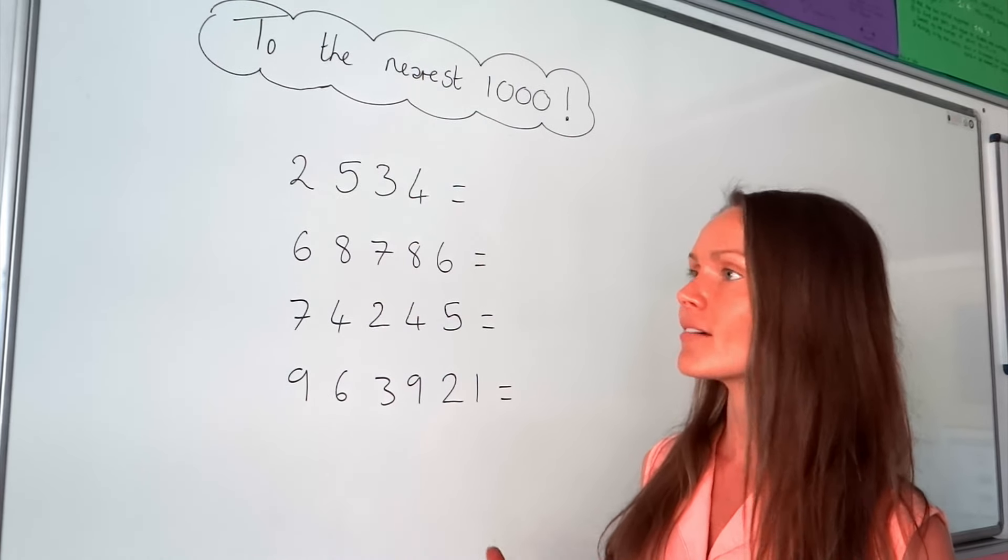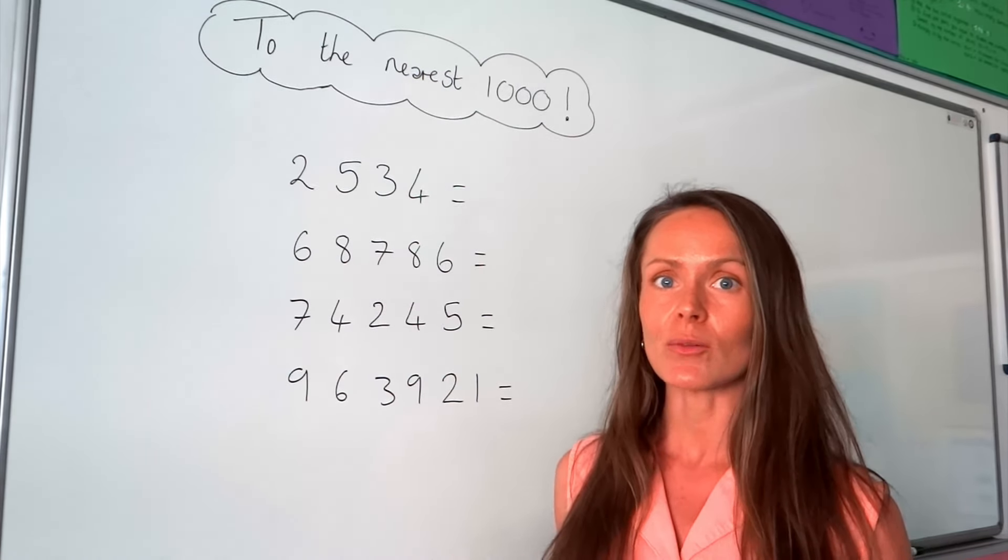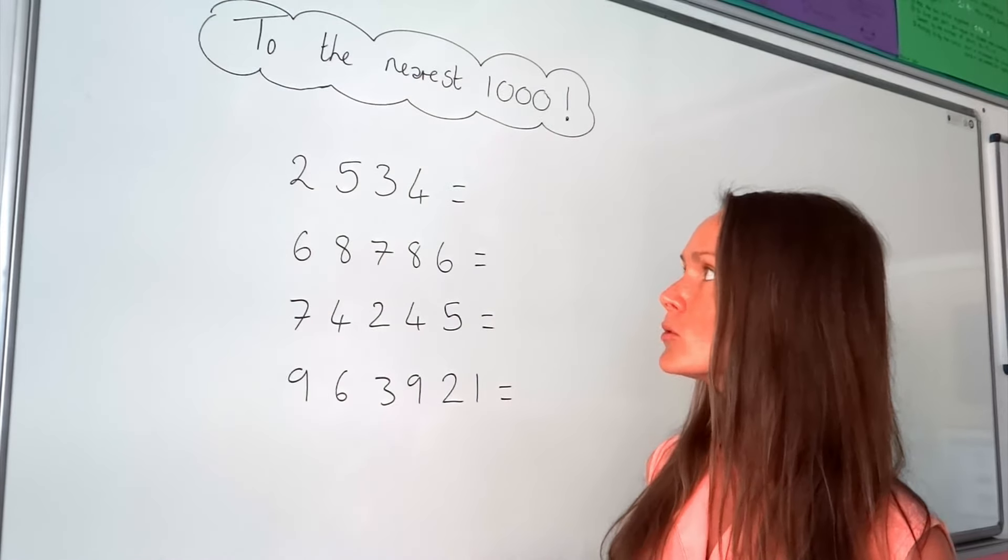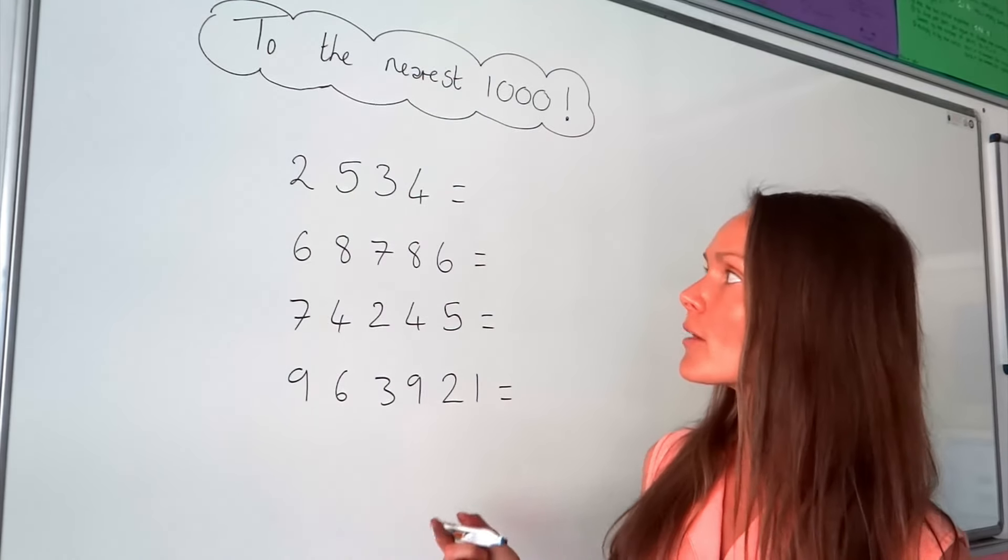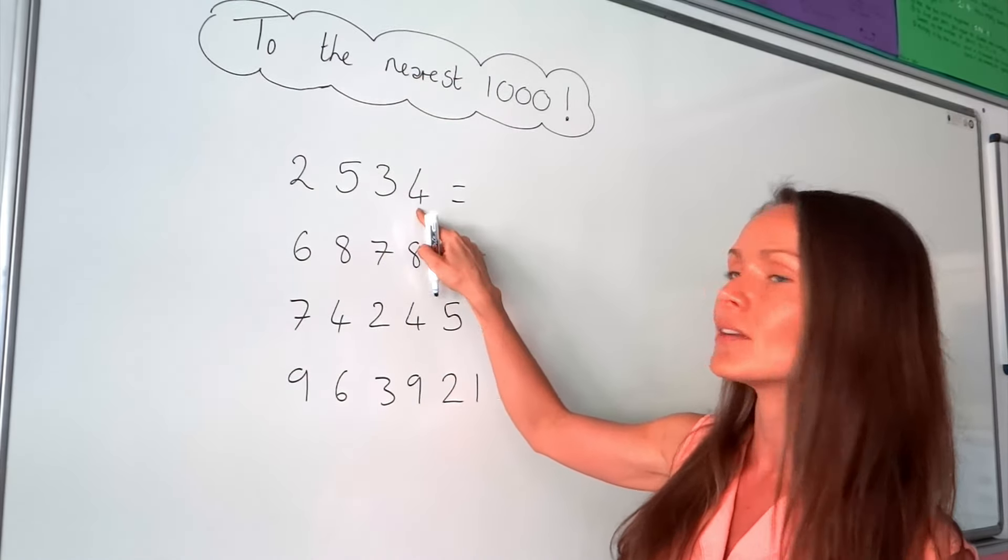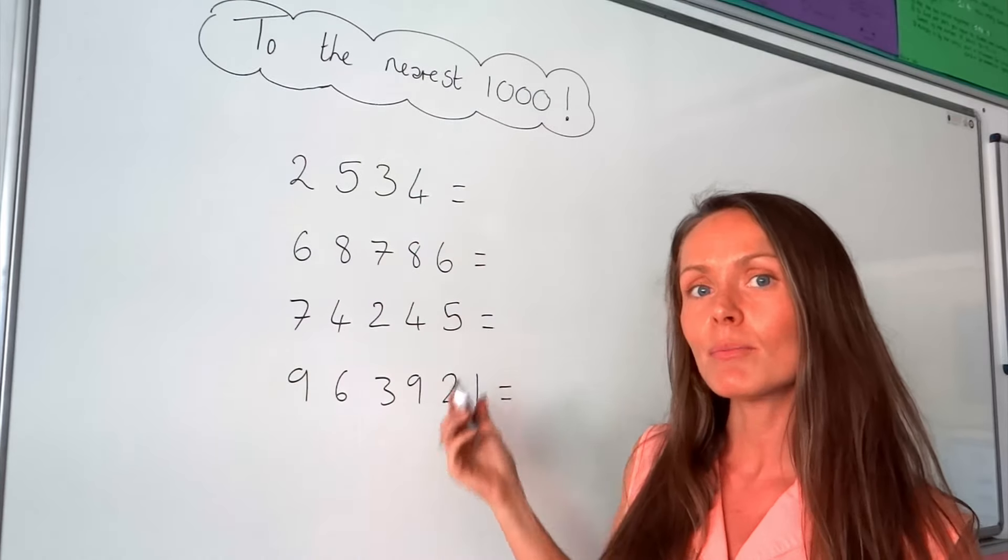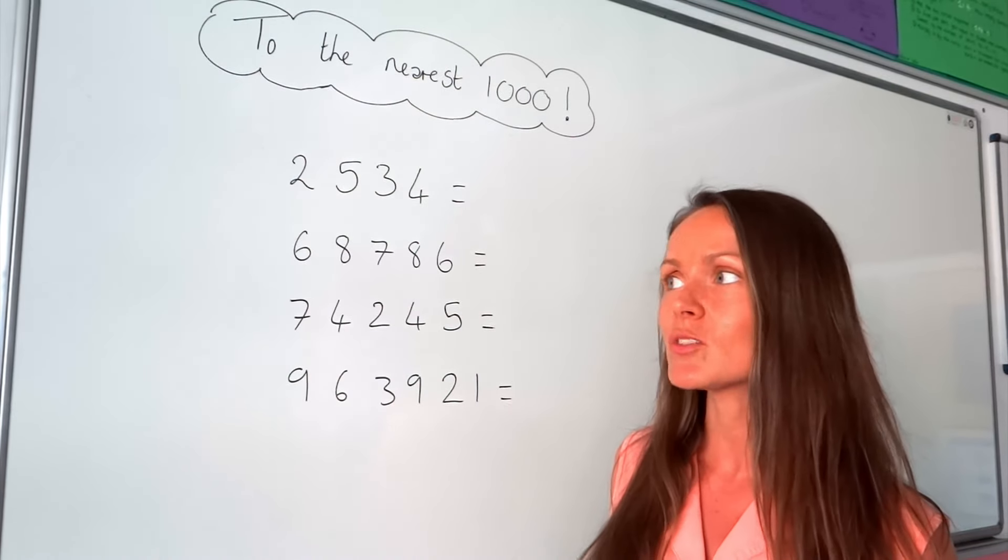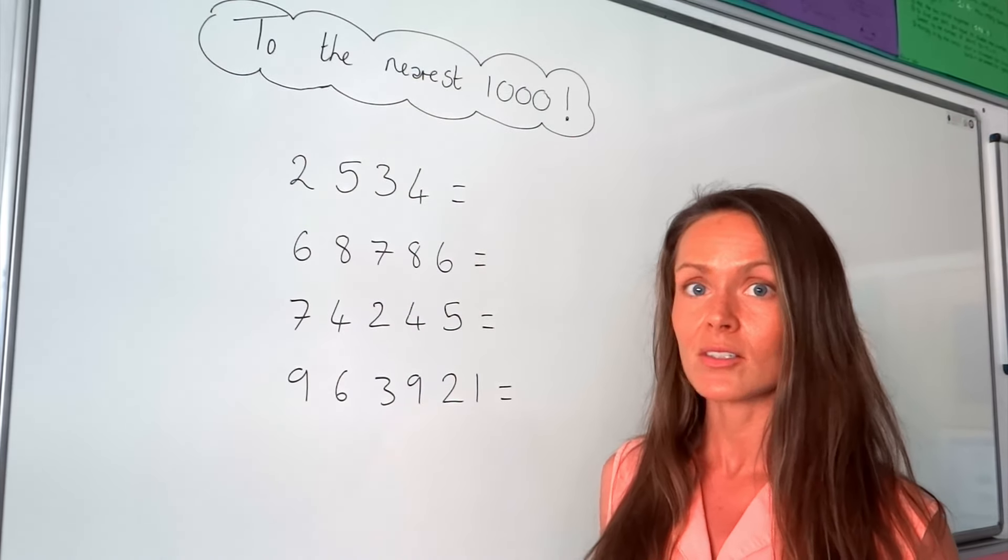So when we're doing these type of rounding questions, what you need to do is consider the multiples of 1,000 that fall either side of the number given in your question. When I say multiples of 1,000, I just mean the numbers in the 1,000 times table.